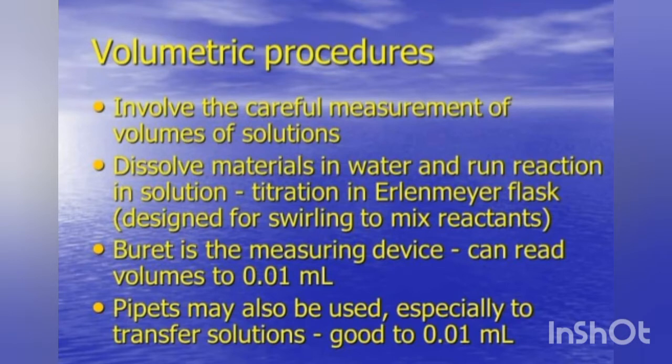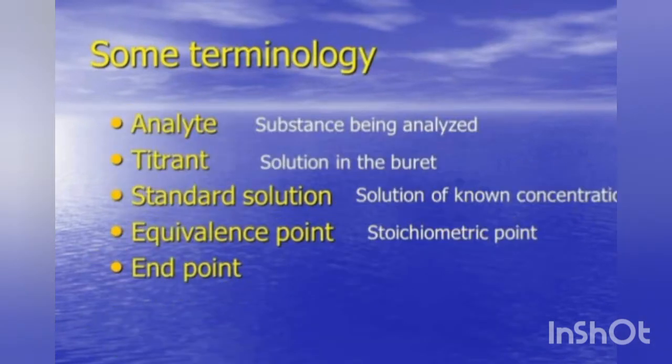Titration in an Erlenmeyer flask is done, which is designed for mixing the reactants. The burette is a measuring device which can read volumes up to 0.01 ml — it may contain acid or base. A pipette may be used especially to transfer solutions up to 0.01 ml.